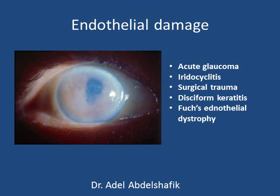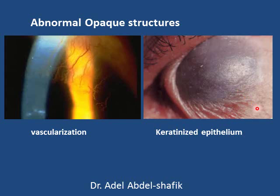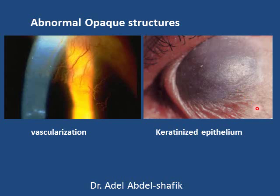If there is endothelial damage, the cornea will turn opaque. Here are some examples of endothelial damage. The cornea is also transparent because of the absence of opaque structures. A normal cornea has no blood vessels — blood is opaque, so if there is vascularization of the cornea it will turn opaque. Also, the epithelium of the cornea is non-keratinized; keratin is opaque. In severe dry eye, the epithelium of the cornea and conjunctiva can become keratinized, resulting in an opaque cornea. These are the factors that make the cornea transparent.